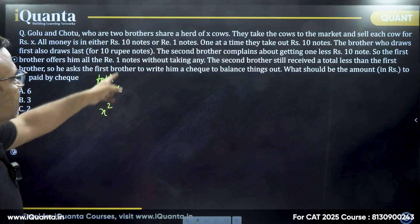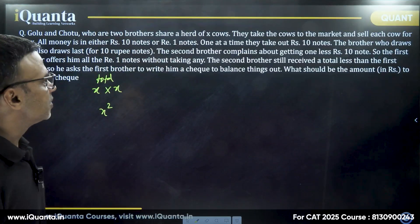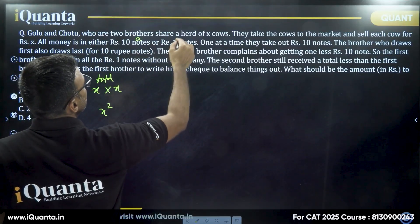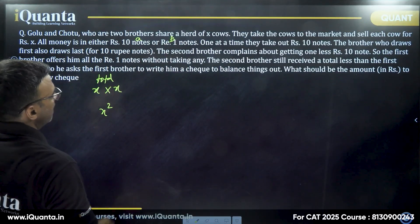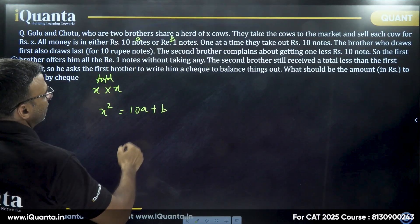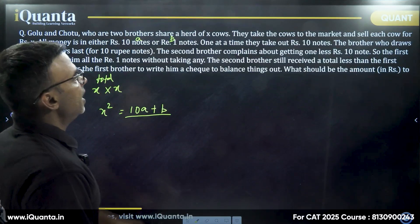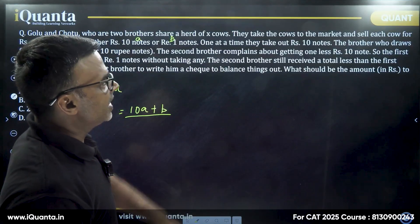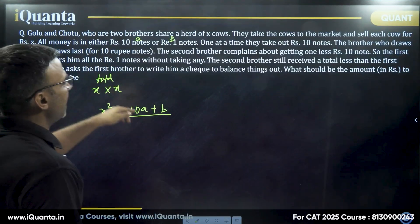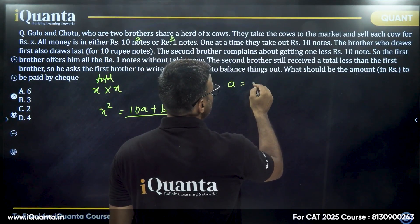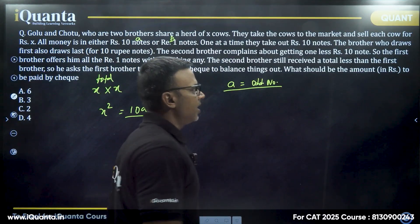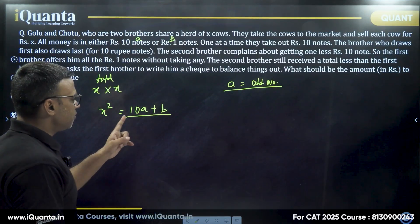All this money is in either 10-rupee notes or 1-rupee notes. Suppose there are A notes of 10 rupees and B notes of 1 rupee, so the total is 10A plus B. One at a time, they take out 10-rupee notes. The brother who draws first also draws the last, so A has to be an odd number. Note this very carefully — A has to be an odd number.